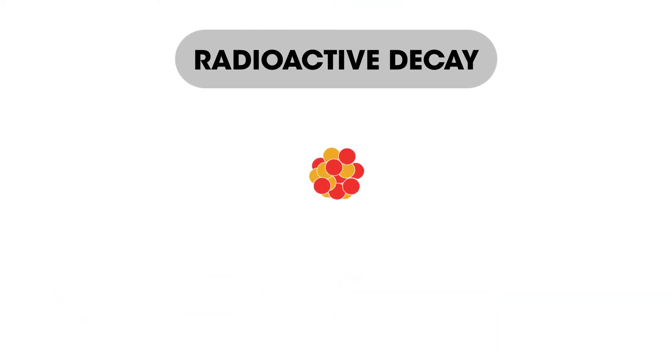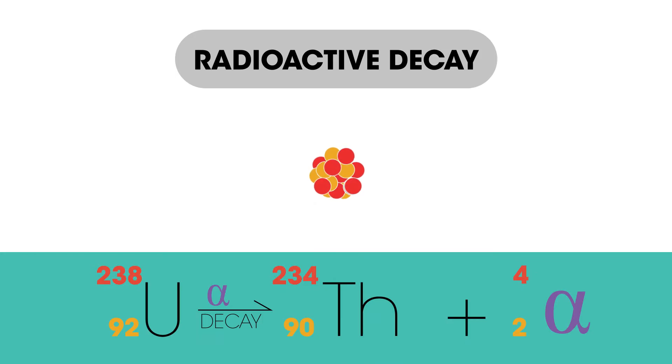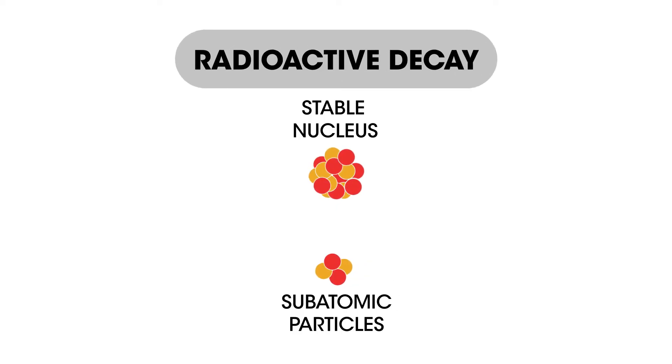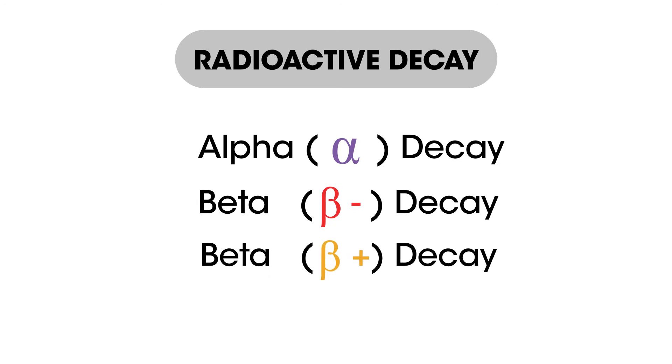In this video we're going to look at radioactive decay and how to balance the equations that describe them. Radioactive decay equations show us what is produced when a radioactive nucleus decays. Remember, an unstable nucleus can become stable by losing some subatomic particles. This is known as radioactive decay. We need to consider three types of decay: alpha decay, beta negative decay, and beta positive decay.